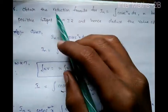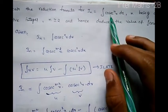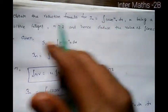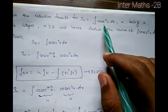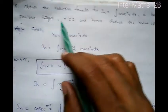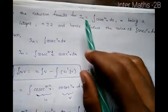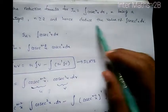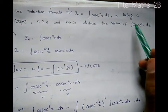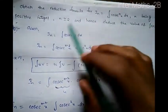Hi friends, in this video we will look at the reduction formula for I_n, where the question is the integration of cosine power n times x into dx. We will derive the reduction formula for integration of cosine power nx into dx, and hence find the value of integration of cosine power 5x into dx.